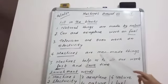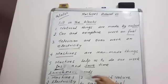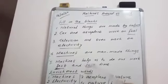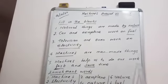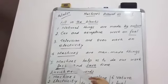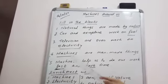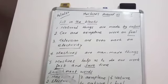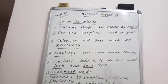M-A-N man, M-A-D-E made, T-H-I-N-G-S things. Machines are man-made things. Machines help us to do work. So what do machines do? The machines help us to do the work fast and save time. F-A-S-T fast, S-A-V-E save, T-I-M-E time.